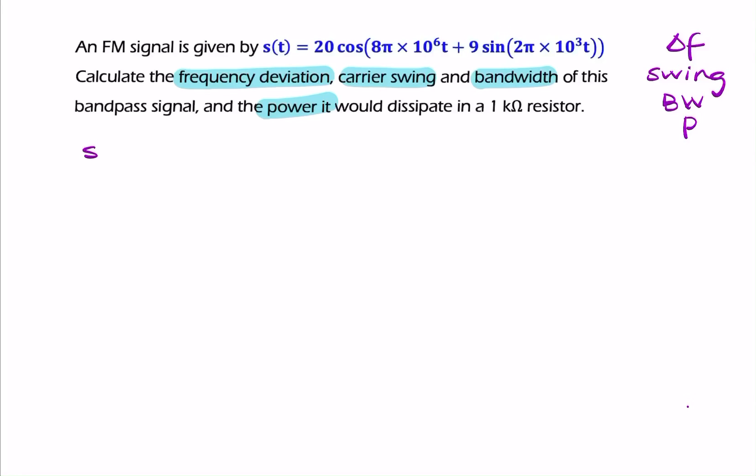You could recall the general form of an FM signal. It looks something like this: A cosine, the carrier component, plus the modulation index. And assuming we have a single-tone message in the form of cosine omega_m t, then you have beta sine omega_m t.